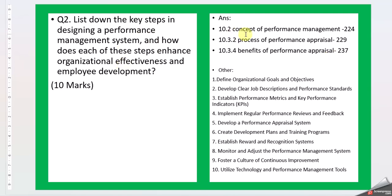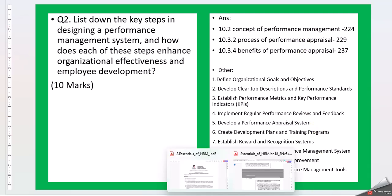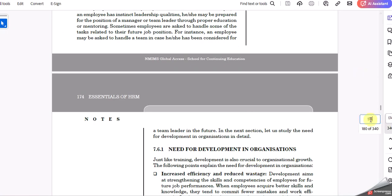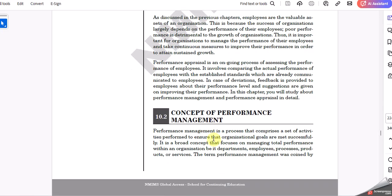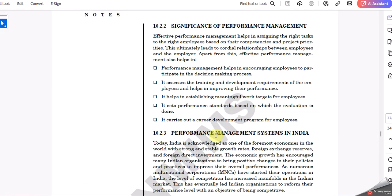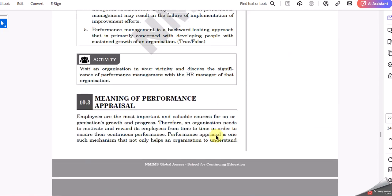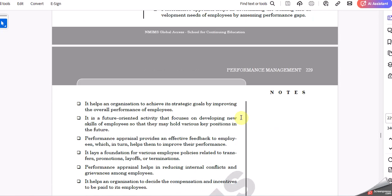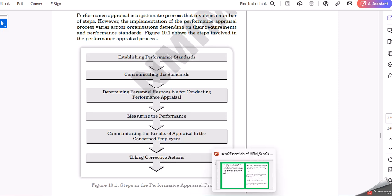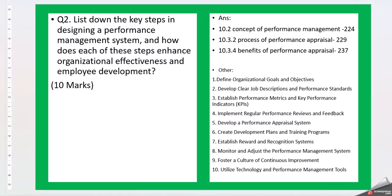Again, in this question we are not finding direct answers in the textbook — we are looking around page 224. This covers the concept of performance management, and then we move straight to performance appraisals — the meaning of performance appraisals, the performance appraisal process. These are the factors we have to read through and incorporate into the answer.